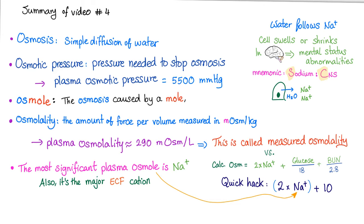Osmotic pressure is the pressure needed to stop osmosis. An osmol is osmosis caused by a mole. Osmolality is the amount of force per volume, measured in milliosmoles per kilogram. Osmolarity is per liter. Plasma osmolality is normally 290 — this is the measured osmolality. Calculated osmolality: 2 × sodium + glucose/18 + BUN/3. Quick hack: double the sodium and add 10.